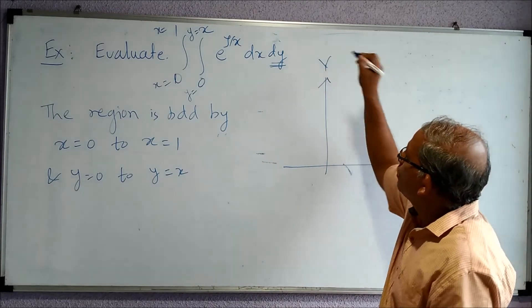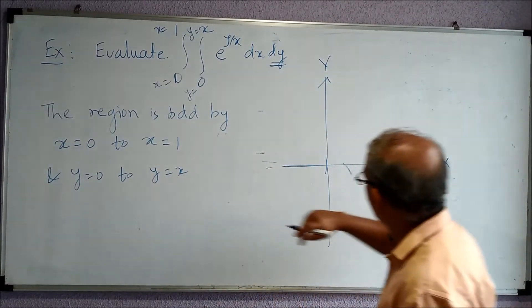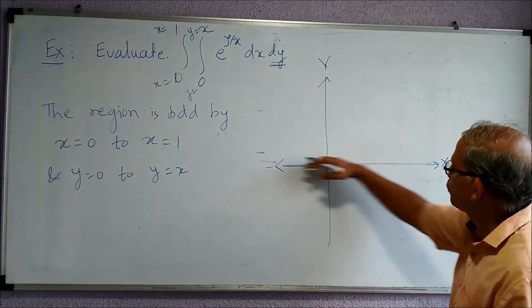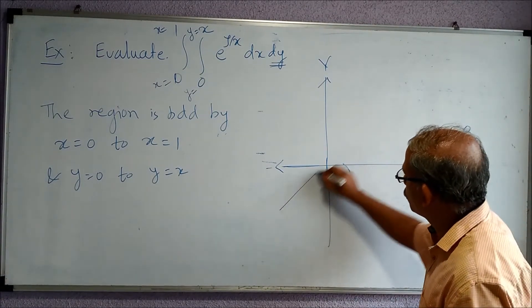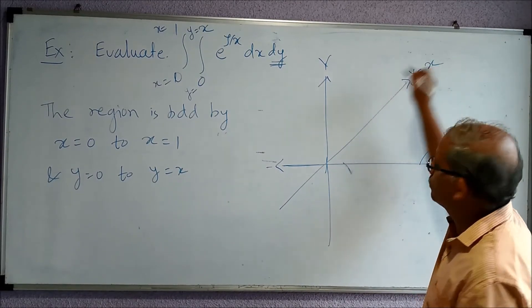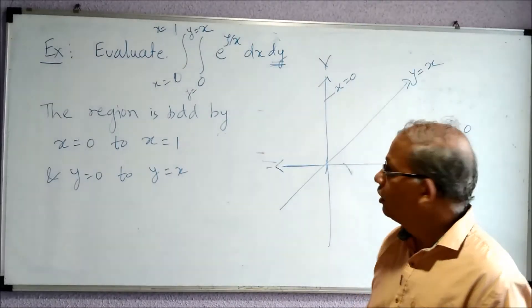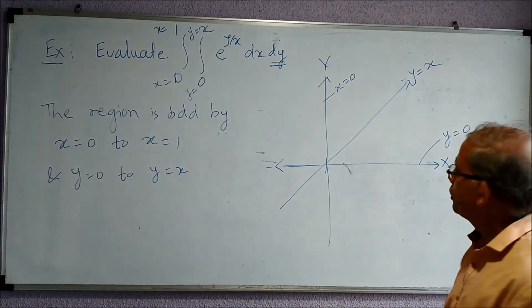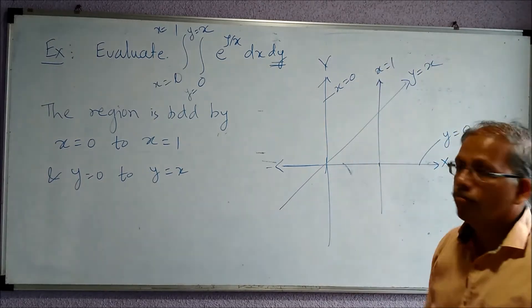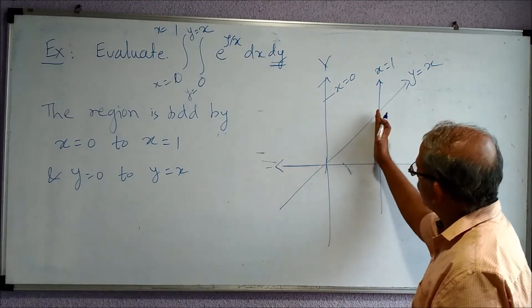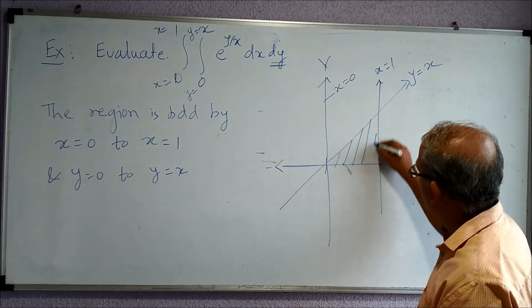What are the limits on y? y equal to 0 is the equation of the x-axis. To y equal to x — this is a line with positive slope passing through the origin. And from x equal to 0, which is the y-axis, to x equal to 1, which is a line parallel to the y-axis cutting the x-axis at 1. So our region is bounded from 0 to 1 on this side — it is basically a triangle. This is our region.